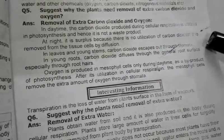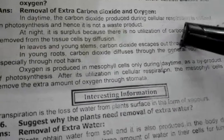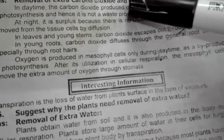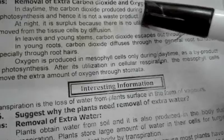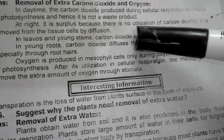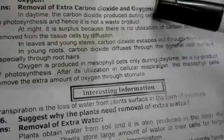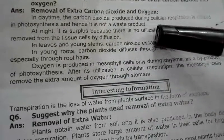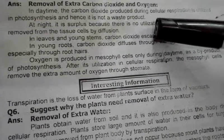At night, carbon dioxide is removed from the tissues of the cell by diffusion. You must understand this concept of day and night. During the day, carbon dioxide is used for photosynthesis. At night, carbon dioxide is excreted and removed from the tissue by the help of diffusion.